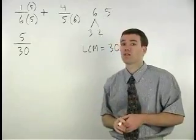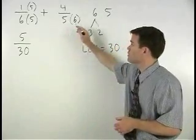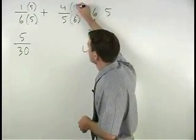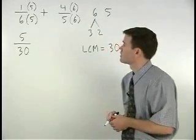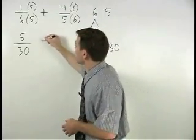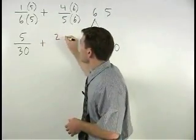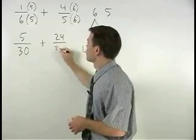And when we multiply the denominator of a fraction by six, we must also multiply the numerator by six. So we have plus twenty-four over thirty.